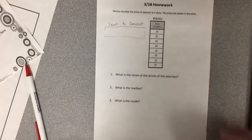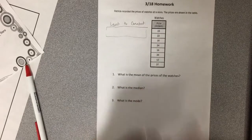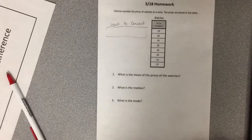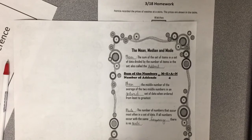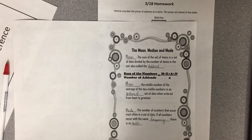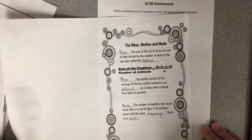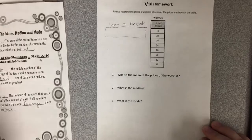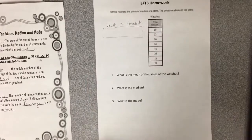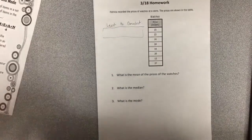Now the first question it asks is what is the mean of the prices of the watches? Now we know that the mean is the sum of the numbers in a set of data divided by the number of items in that set. So that's also called the addend. The sum means that you're going to add and then divide.